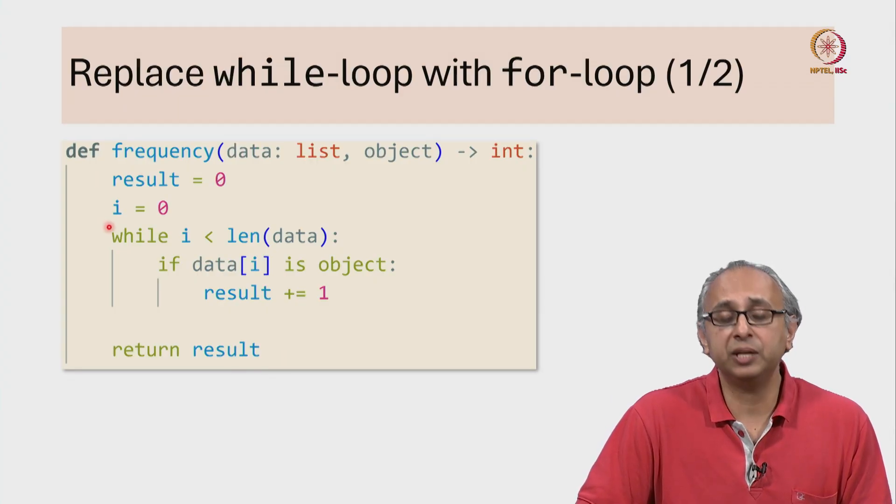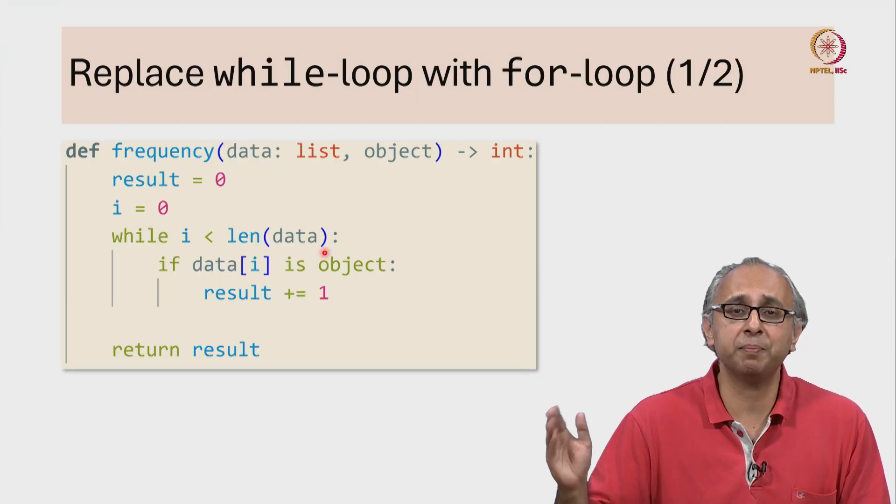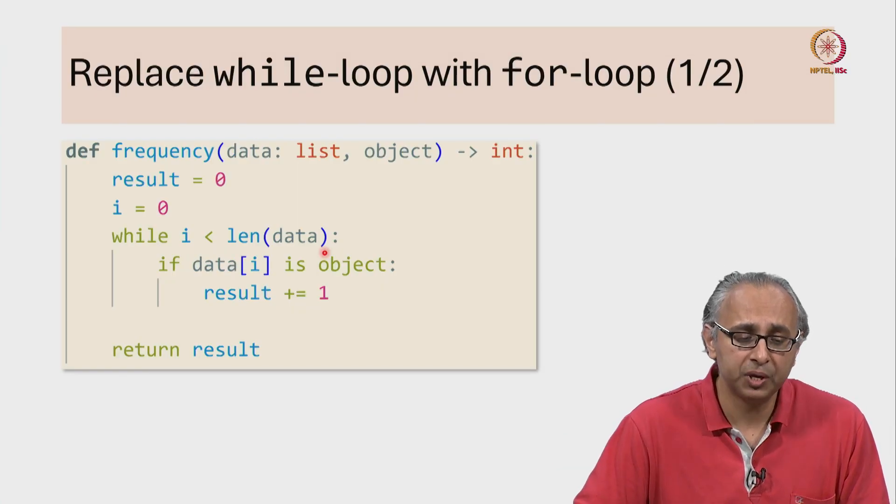Now what do we do? We initialize i to 0 and while i is less than the length of this list—remember the indices are numbered 0 to 1 minus the length of the string—so while i is less than the length of this list,